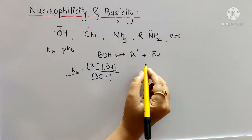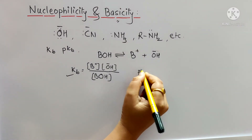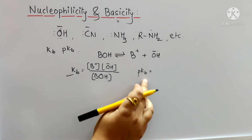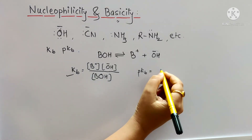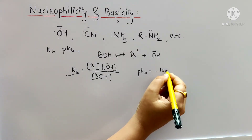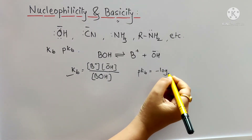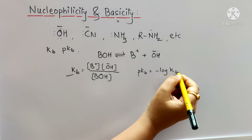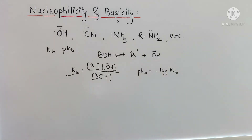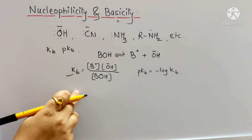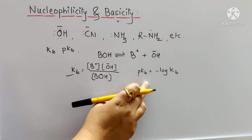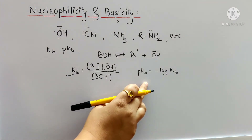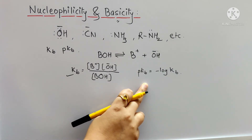pKB is calculated from KB — that is, pKB is the negative log of KB. By this formula we can find out KB and pKB. The smaller the value of pKB, the stronger the base.